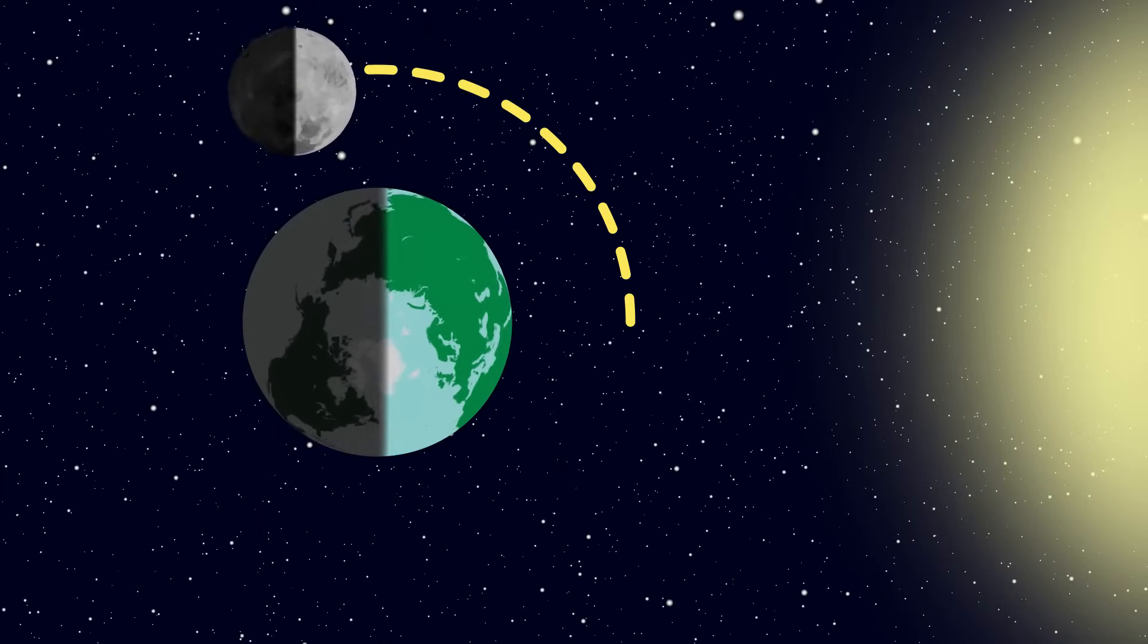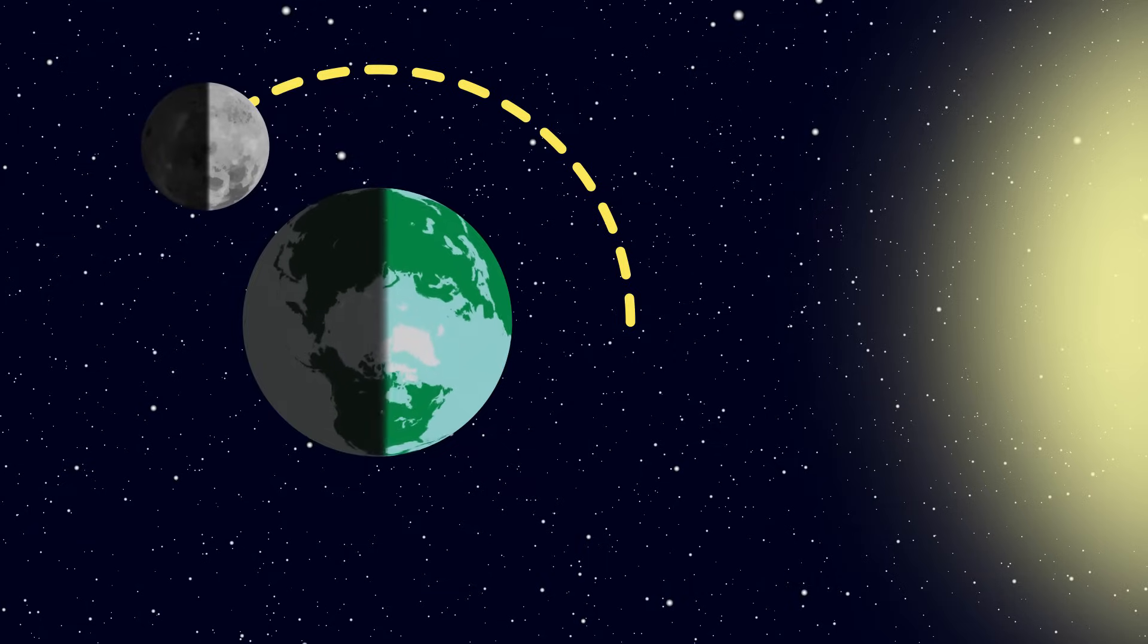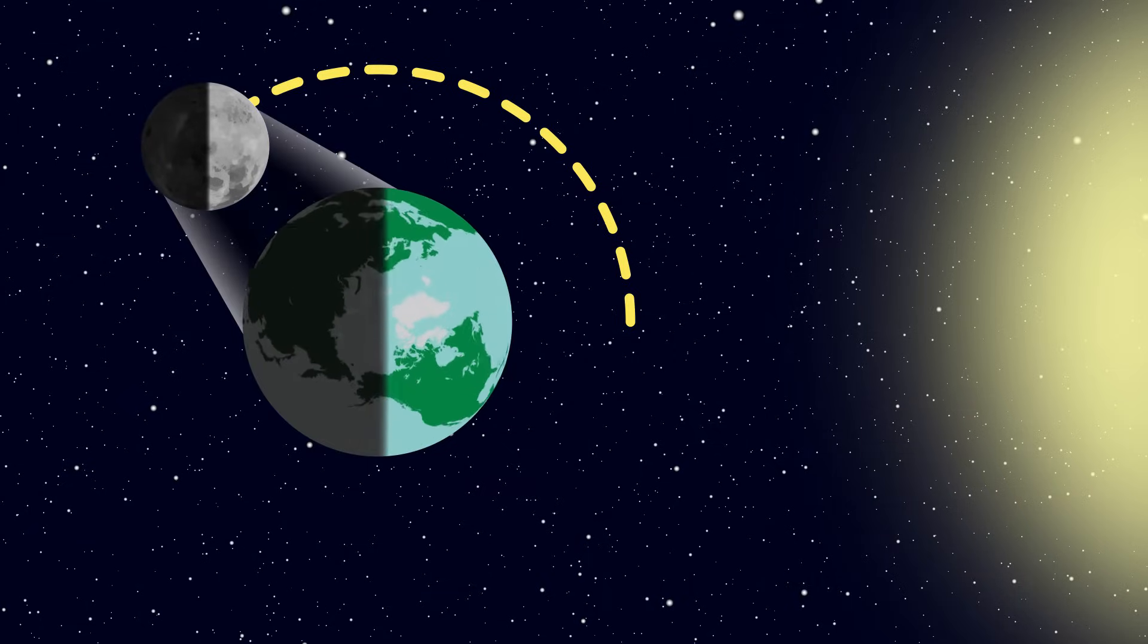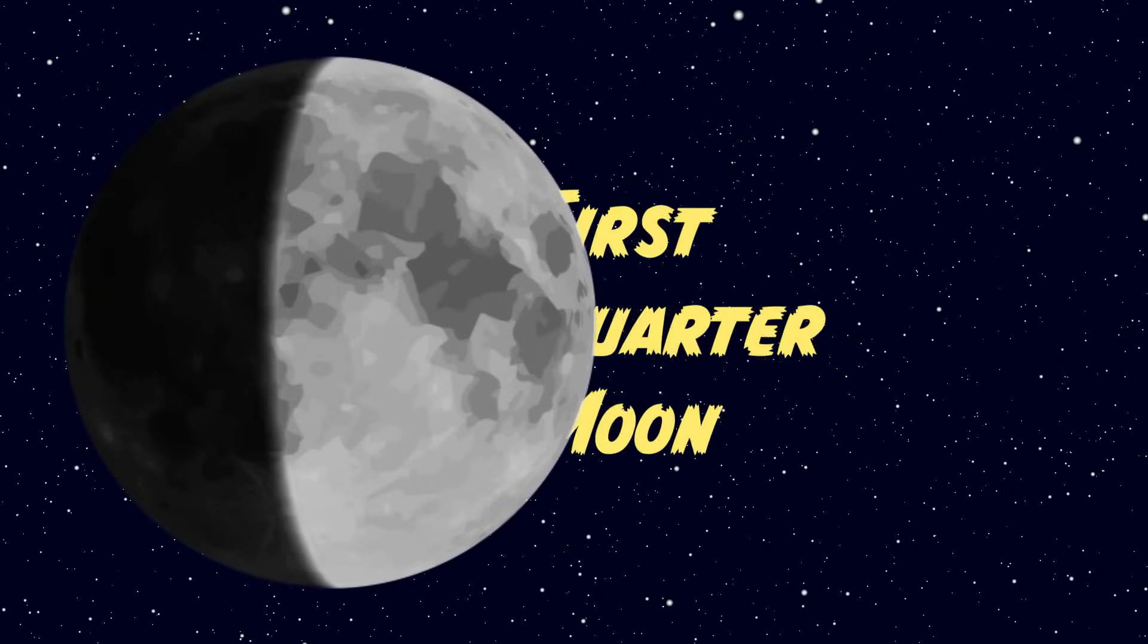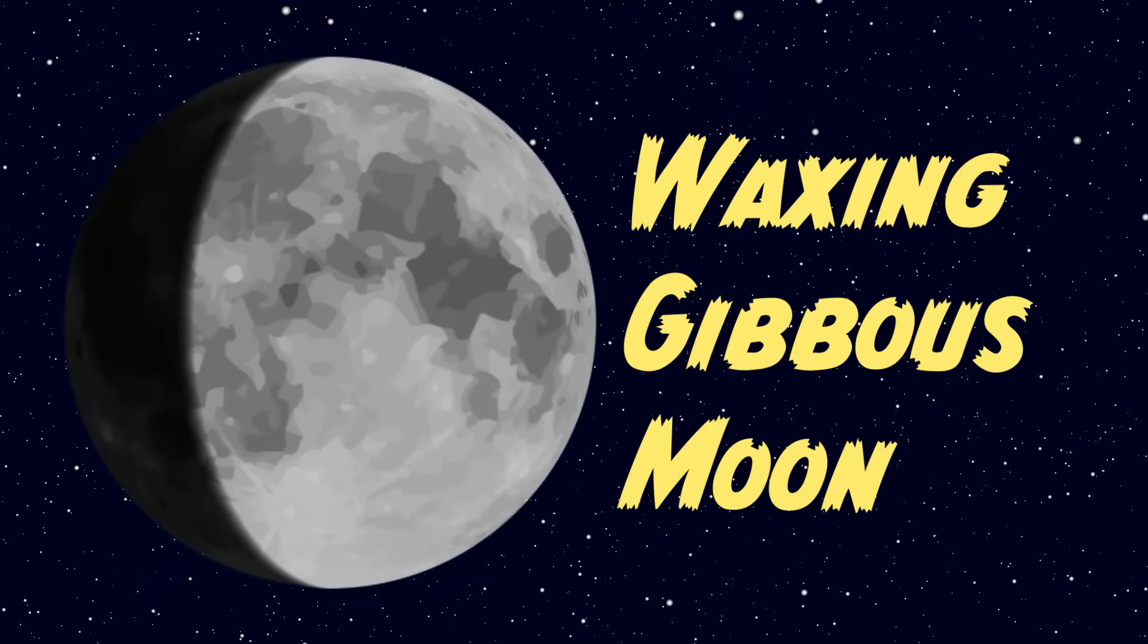As the moon enters the second quarter of its orbit, the illuminated face that we see from Earth begins to grow even further. This is called the waxing gibbous moon, where gibbous means bulging outwards or growing. Because waxing also means growing, this phase is basically called the growing, growing moon.